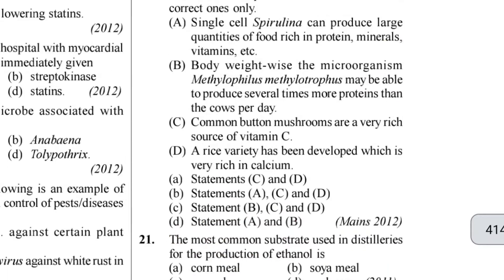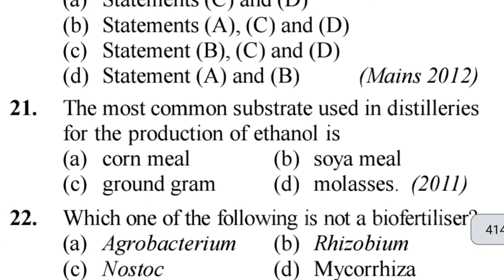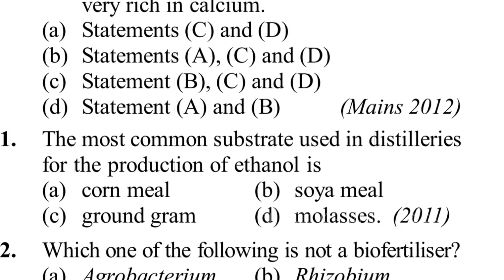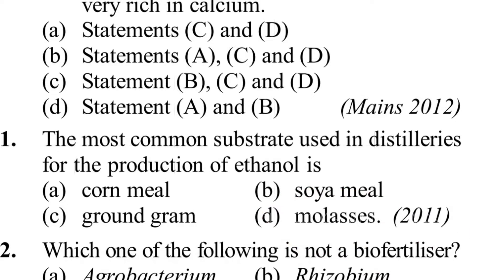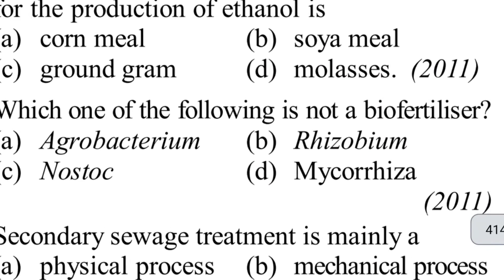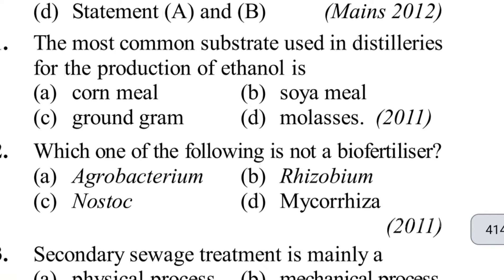Twenty-first question: the most common substrate used in distilleries for the production of ethanol. Very easy - for production of ethanol we use molasses. Molasses is the type of substrate used in the production of ethanol.